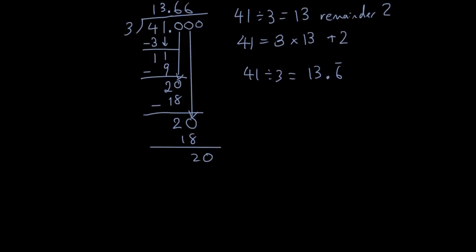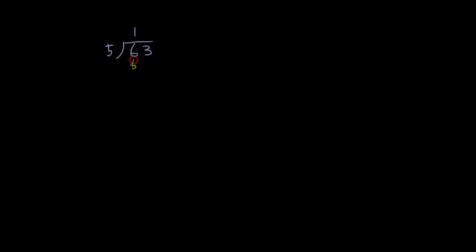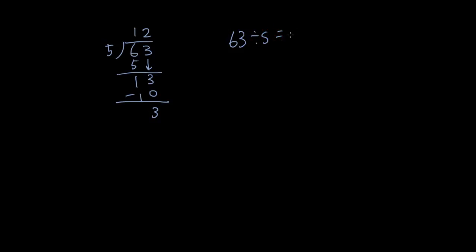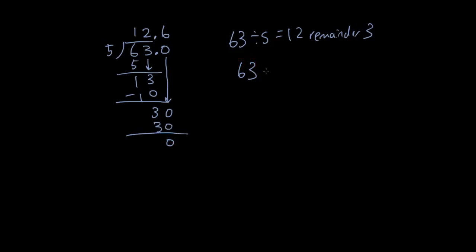Let's try one: 63 divided by 5. 5 times 1 is 5, 6 minus 5 is 1, bring down the 3. 5 times 2 is 10, 13 minus 10 is 3. You can stop here and say 63 divided by 5 equals 12 remainder 3, or keep going — put a decimal point and a 0, bring down the 0. 5 times 6 is 30, remainder 0. So 63 divided by 5 equals 12.6.